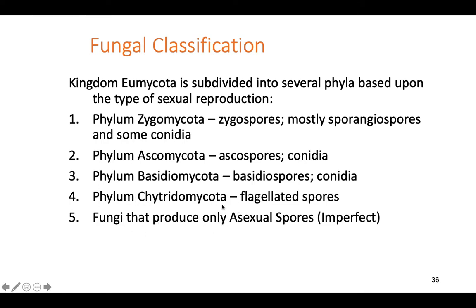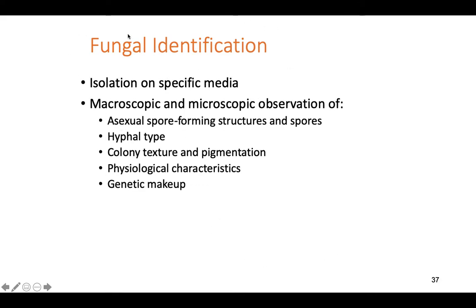How do you identify a fungus? You isolate them on media specifically made for fungi that allows only fungi to grow. Then you look at them under a microscope and observe how spores are formed, what shape the spore-bearing structures are, what type of spores they are, whether they have septate or non-septate hyphae, color, texture, and shape. You can also run a genetic scan to determine the genetics. That's how you identify fungi.